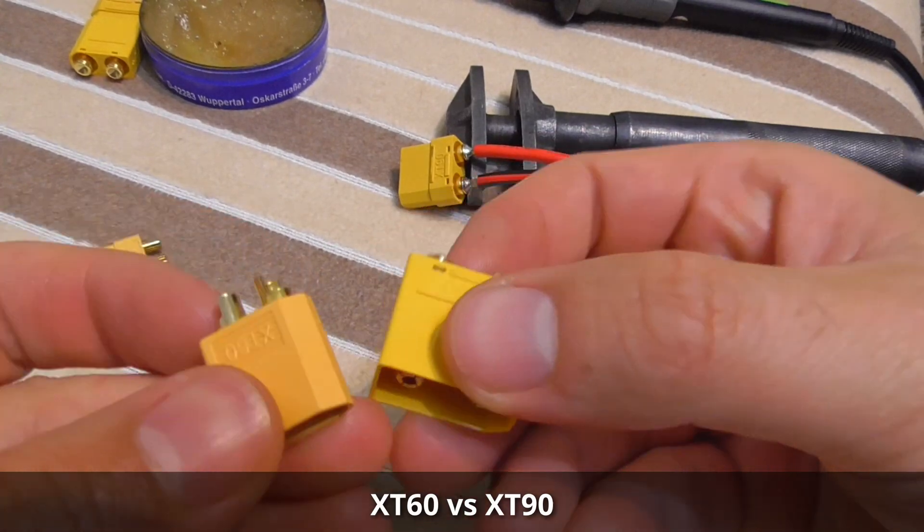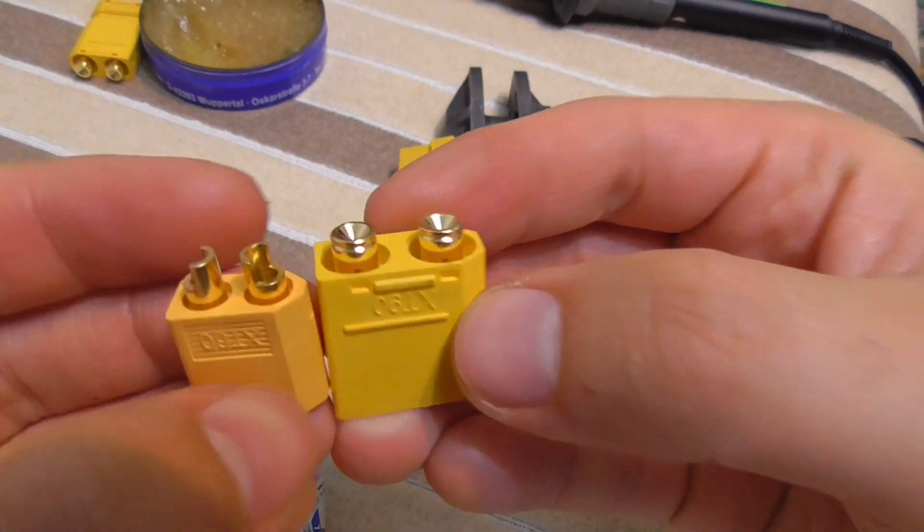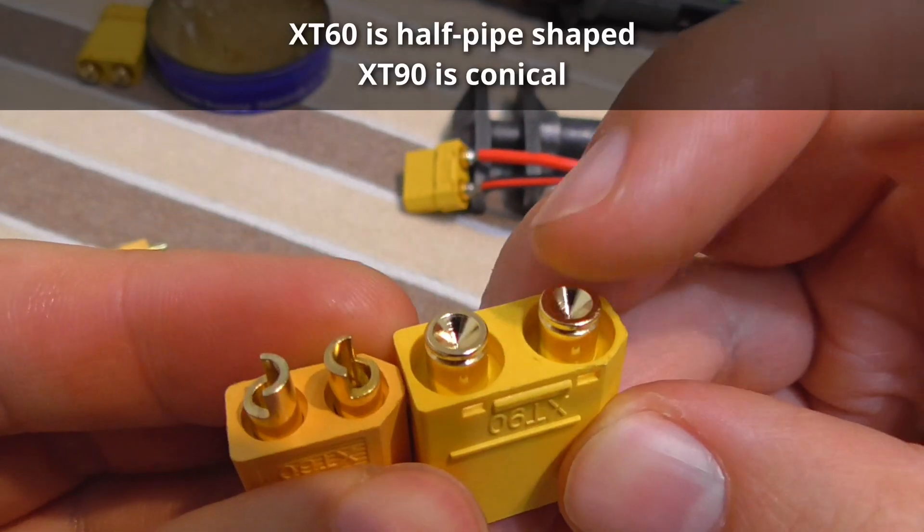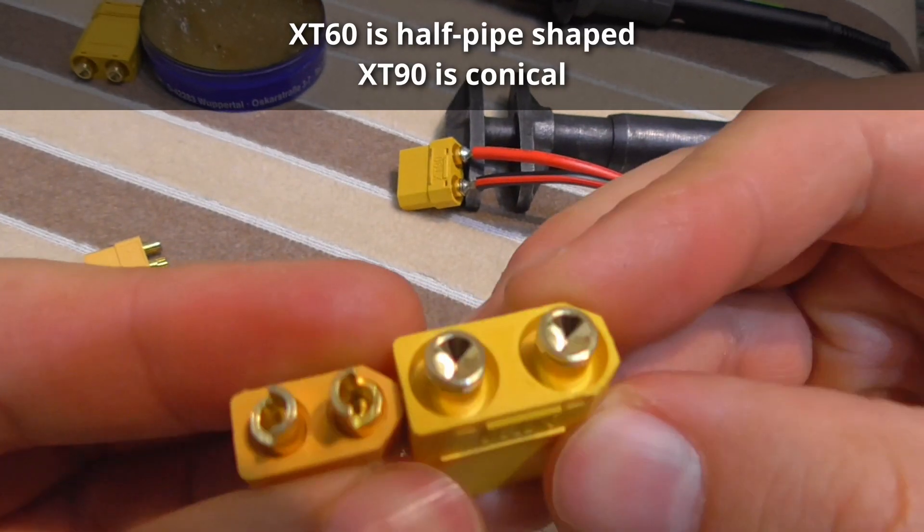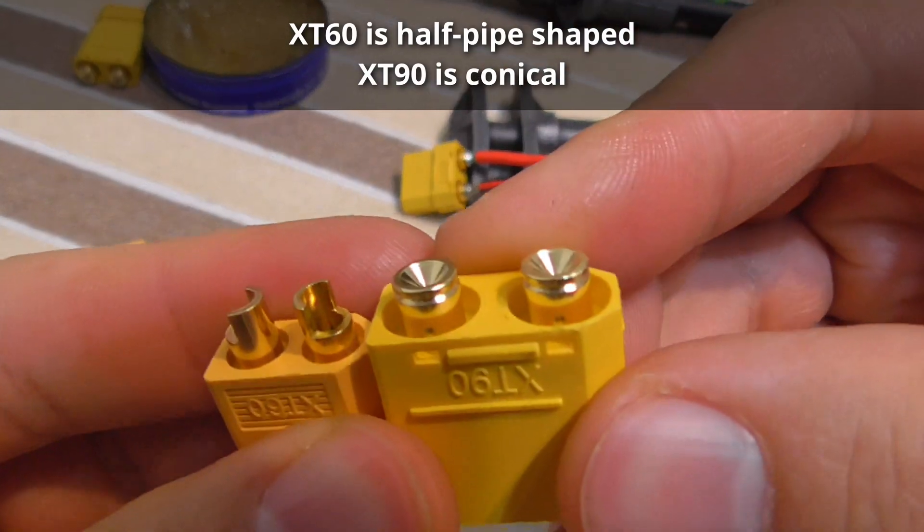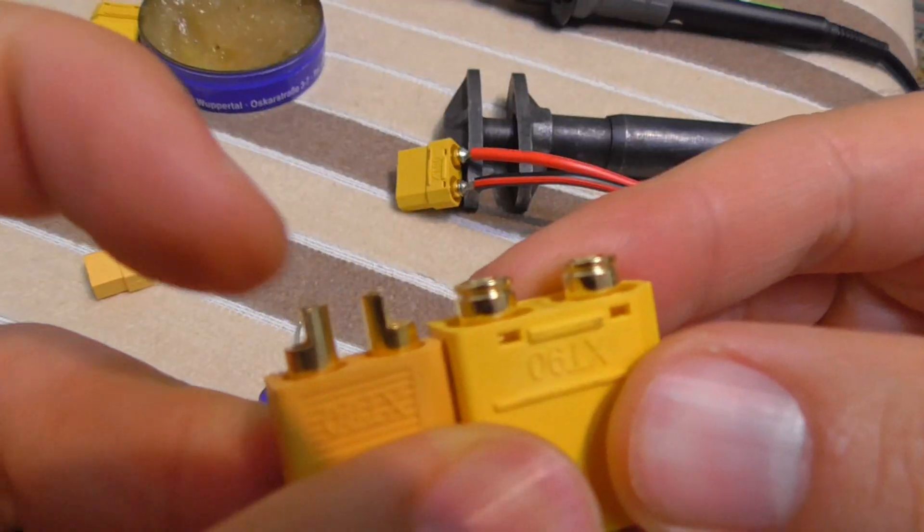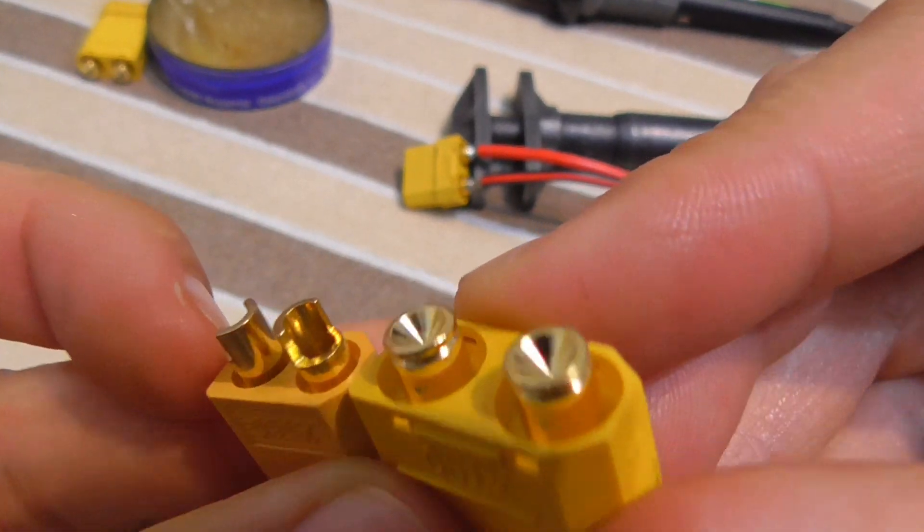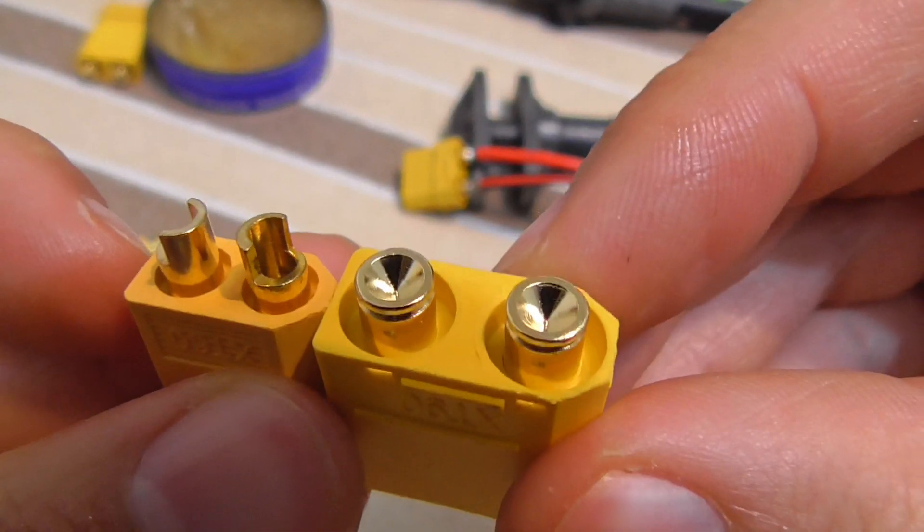And XT90 and XT90. Of course one is smaller, but look at the end. This is conical, that has a half pipe shape. This is holding the wire much better compared to that one.